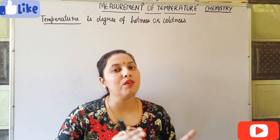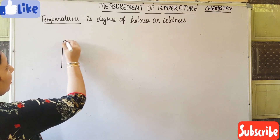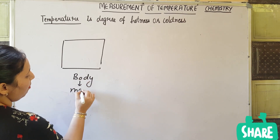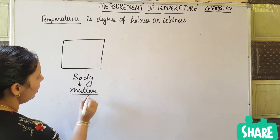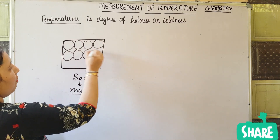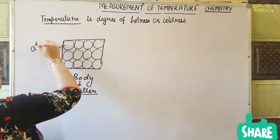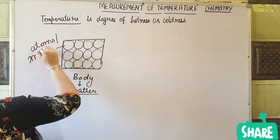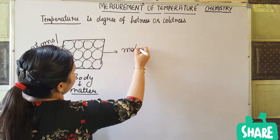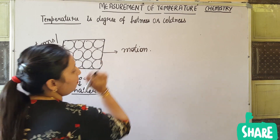Now let's understand how heat is produced in a body. Let us consider a body — this body is matter. As we have already studied in a previous lecture, matter is made up of small particles, which may be atoms or molecules. These particles are always in motion.